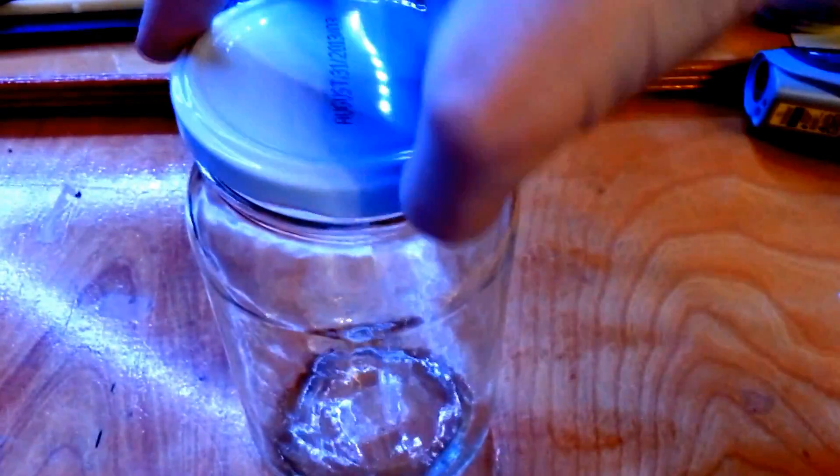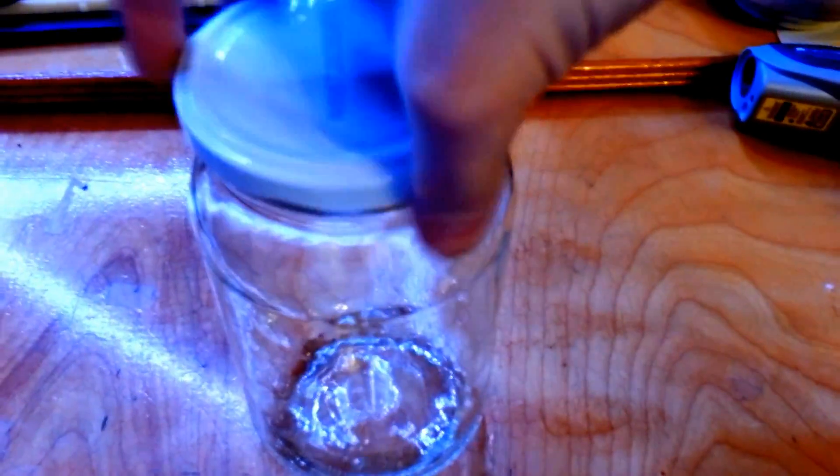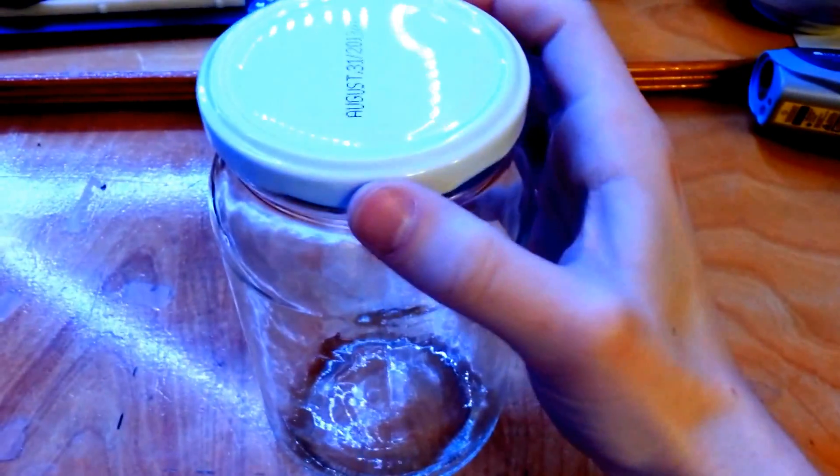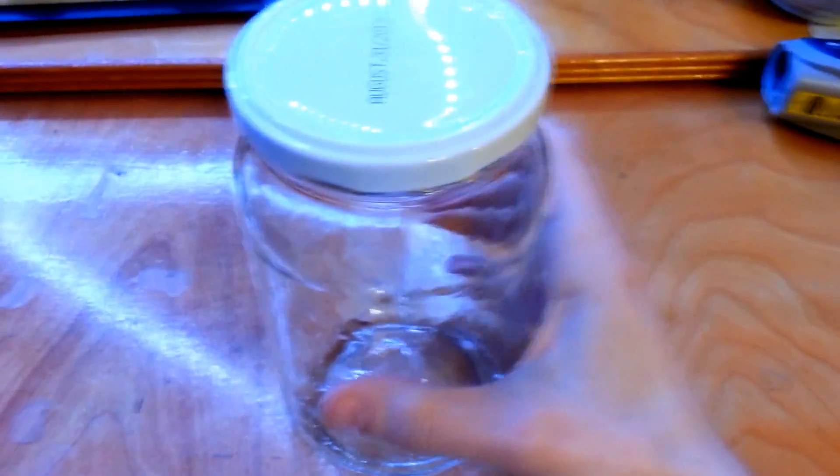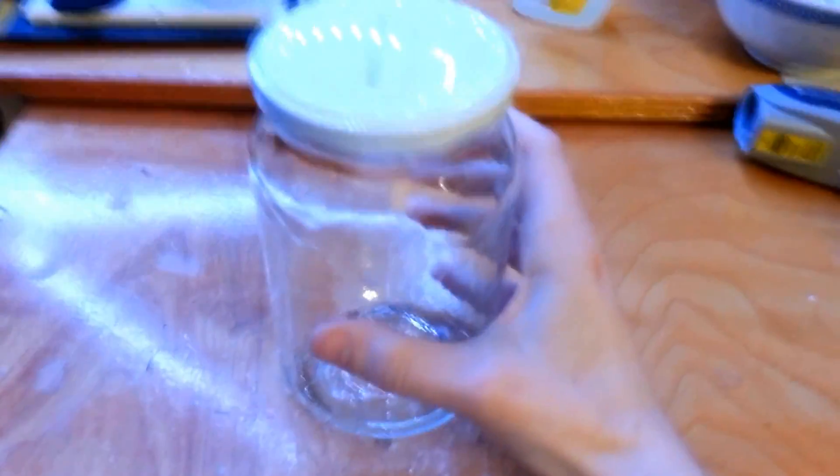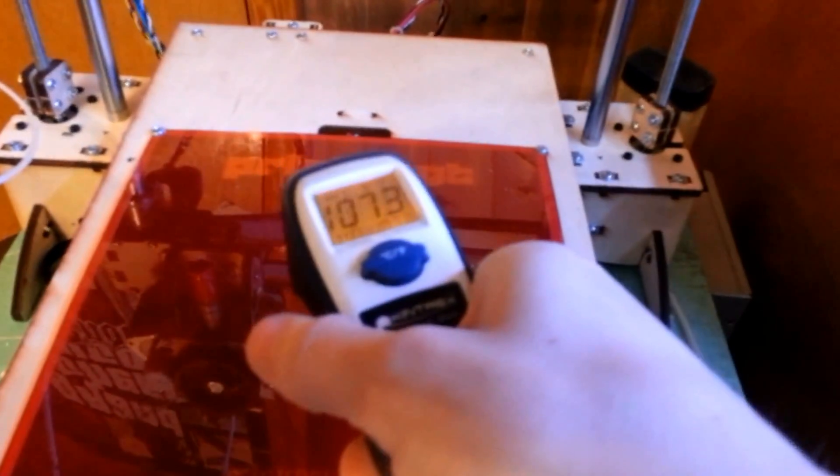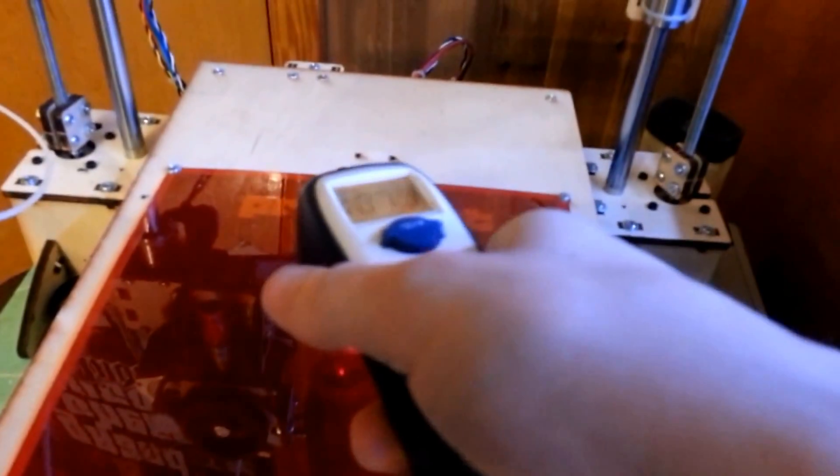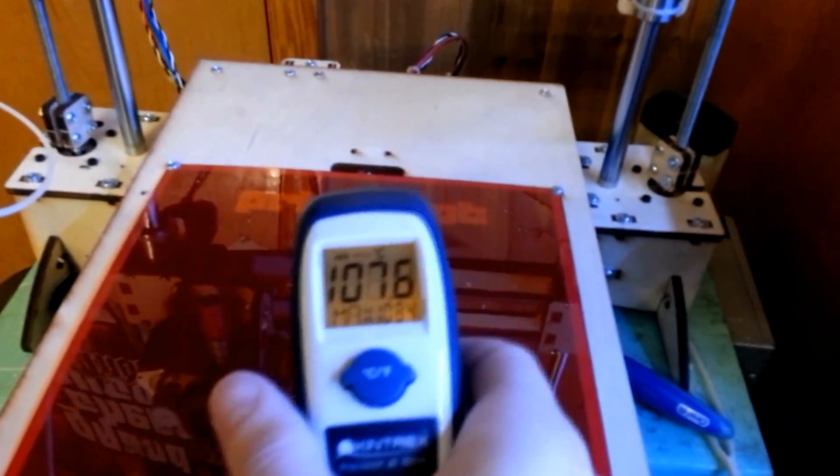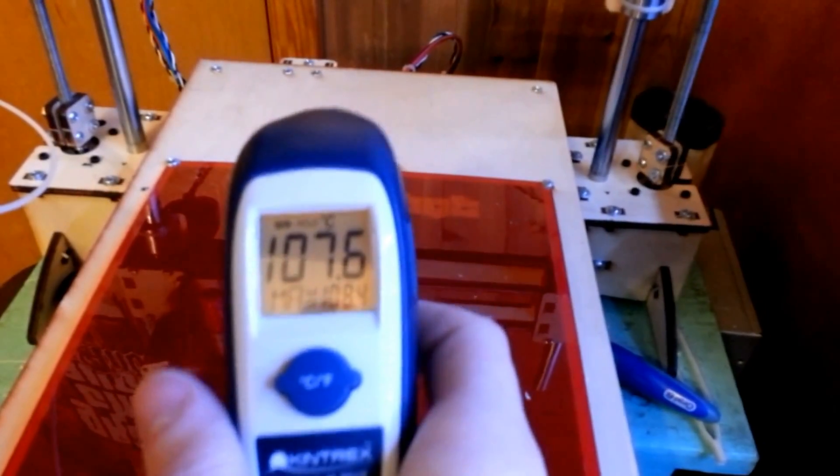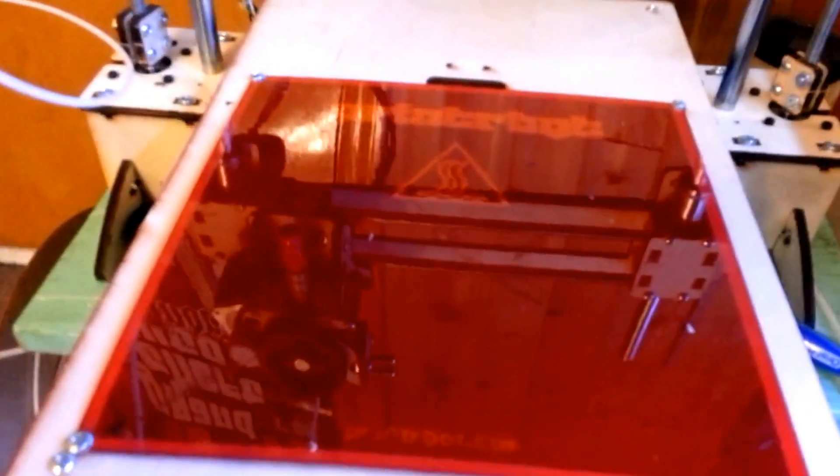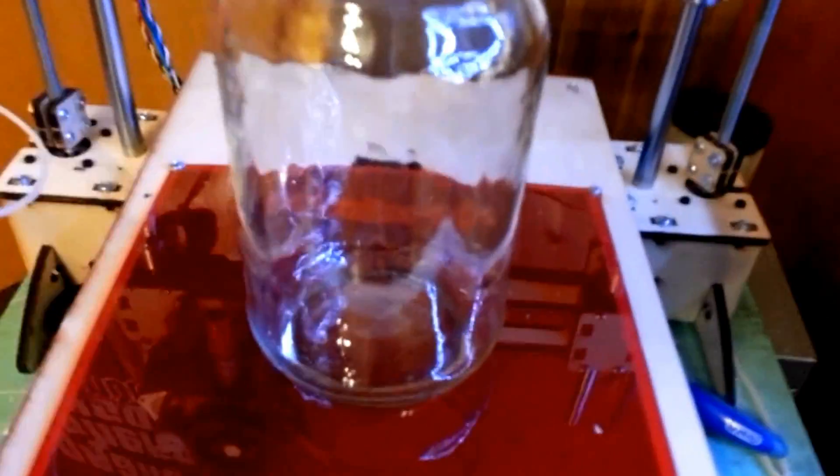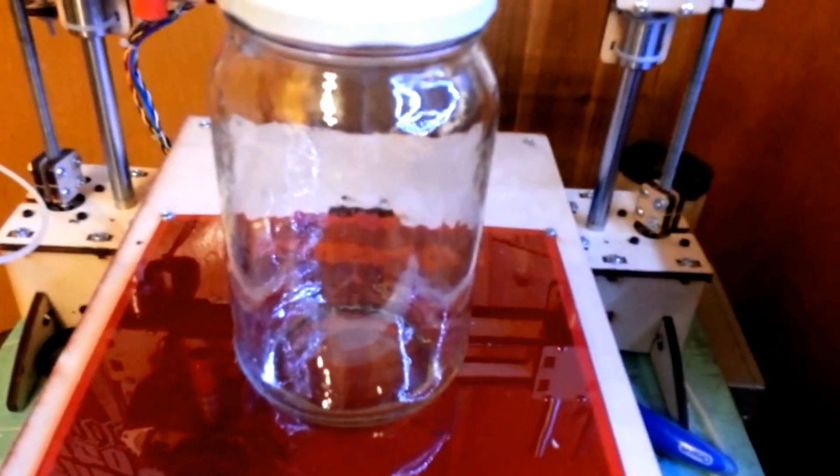Now cover it with the lid lightly because vapor is going to be escaping so you want to give it some room. You don't want to pressurize this and make it hard to open up. It looks like we're up to temperature now. Right in the center we got about 107.6 so let's put on the jar. Now right in the center let's see when we start getting some vapor showing up.